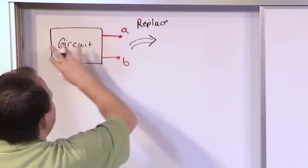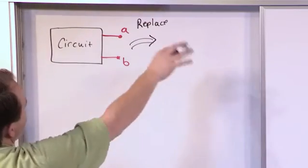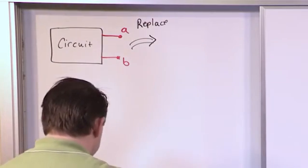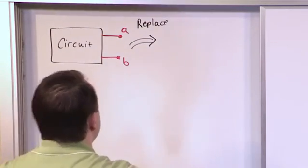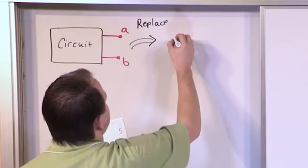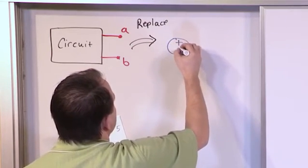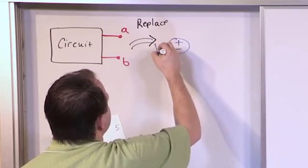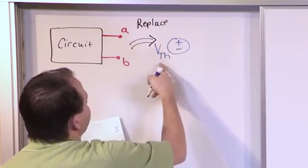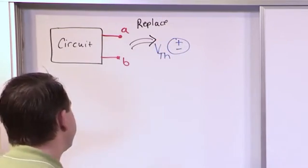I can replace this. It doesn't matter what's in the box. I can replace the whole enchilada with the following: a voltage source that I call the Thevenin voltage source. That's VTH, the Thevenin source. It's just a voltage source.